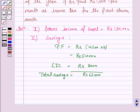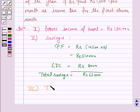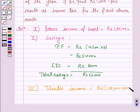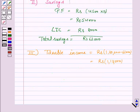The third step is to find taxable income by subtracting all the savings from the gross income. Taxable income = Rs. 1,80,000 − Rs. 62,000 = Rs. 1,18,000. This is the taxable income.